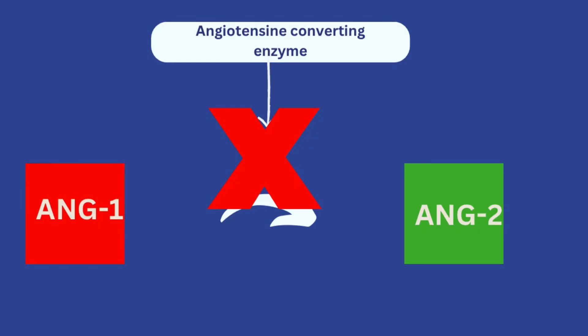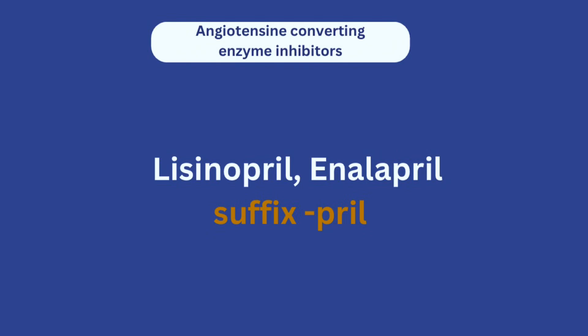What ACE inhibitors do is stop the Angiotensin Converting Enzyme from converting Angiotensin 1 to Angiotensin 2, so there is no blood pressure increase. That is a very simple way of describing the mechanism of action. Examples of ACE inhibitors include lisinopril and enalapril. You'll notice these two examples have the suffix '-pril', so the suffix '-pril' is a good way to remember drugs that fall under this class.